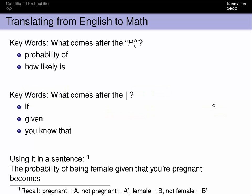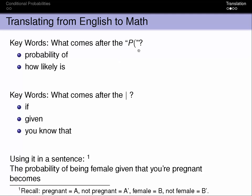Now when we translate, we want to look for certain words in the English. Whatever comes after this P with the opening parenthesis, that's what we're looking for in a sentence. It will say the probability of something or how likely something is. Whatever comes after this given symbol, the pipe, it would have the word if or given or you know that.